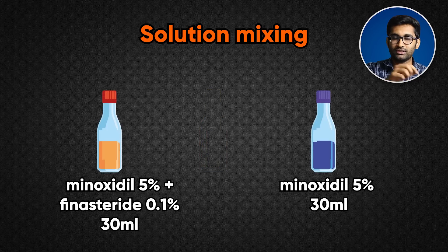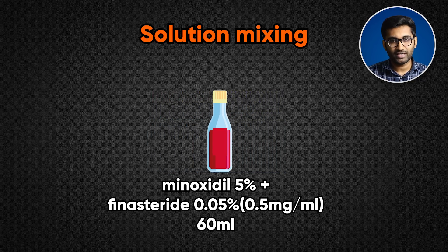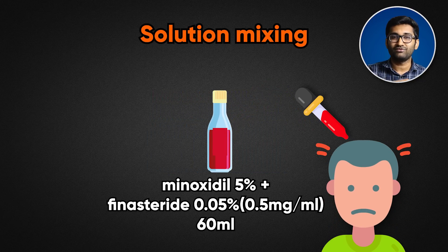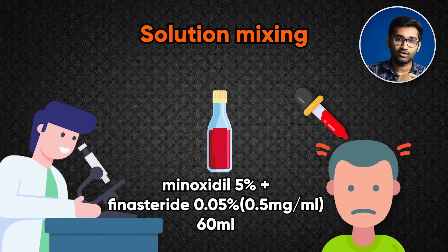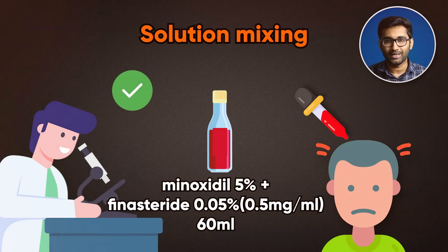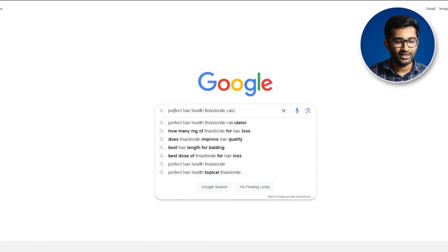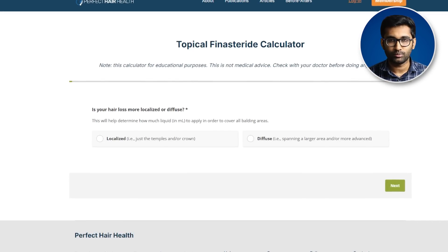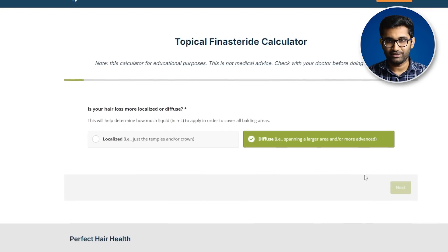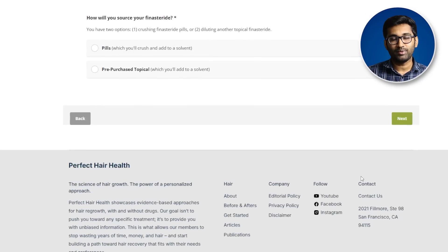You can add 30 mL in this combination solution and find a finasteride concentration suitable for topical use. Applying 1 mL to the scalp delivers 0.25 mg to 0.45 mg of finasteride per dose. For precise dosing, you can use the Perfect Hair Health finasteride calculator — type it into a web page to determine your exact dose.